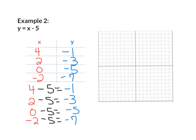Now I have a set of ordered pairs, so I can plot my function. For (4, -1): go right 4, down 1. For (2, -3): go right 2, down 3. For (0, -5): go to 0, down 5. For (-2, -7): go left 2, down 7. Connect the dots, and that is the linear function.